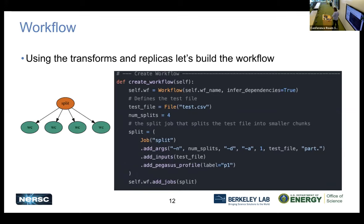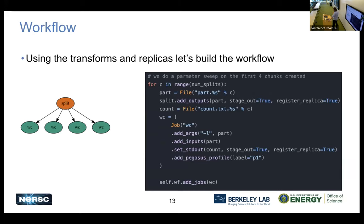Here's where we actually start building up the workflow. In this workflow, we define that we have a file that we need as input. We define that we want to split this into four different parts and give the arguments to our command. We have this job - called the same name as the executable - and we can add things like arguments, add inputs, and then add that job into the workflow. Then we can add different commands too - so now we have our top layer, which is our split, and all of those are going to come into these different word count jobs.